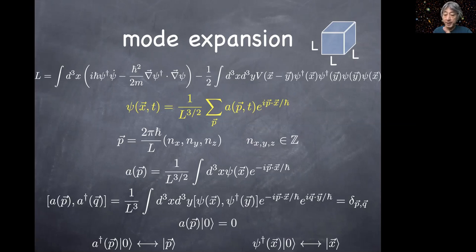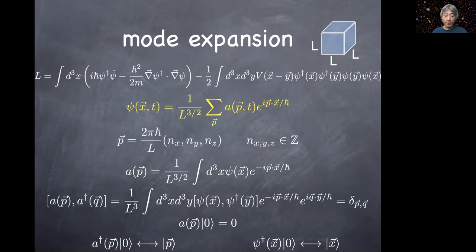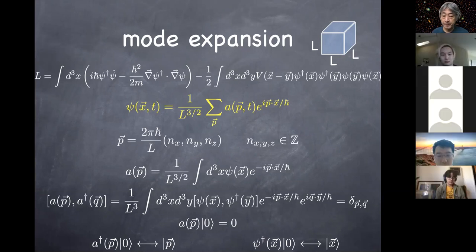This state in QFT is in one-to-one correspondence with the momentum eigenstate in quantum mechanics, much as psi-dagger(x) acting on the vacuum was in one-to-one correspondence to the position eigenstate. You can create multi-particle states using creation operators in momentum space and take linear superpositions by including a wave function in momentum space integrated over p's — exactly what you'd do in momentum space in quantum mechanics.